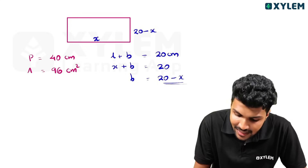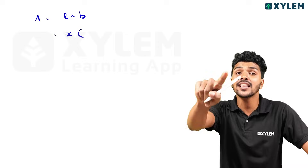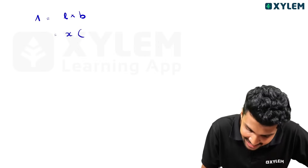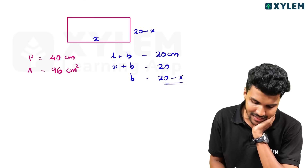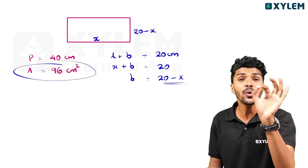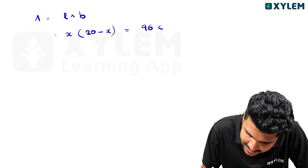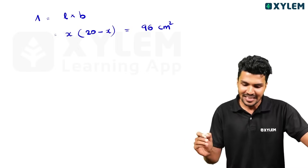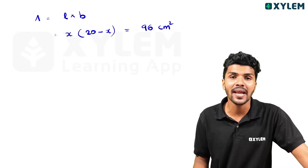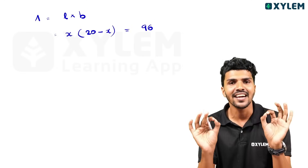Now, the area equals length into breadth. The length is X and the breadth is 20 minus X. The area is 96 cm². So the equation is: X into (20 minus X) equals 96.